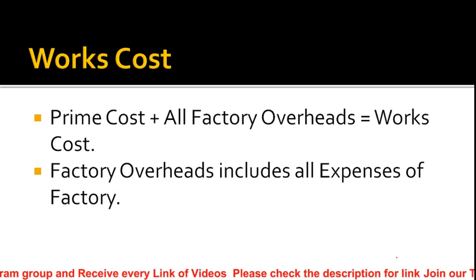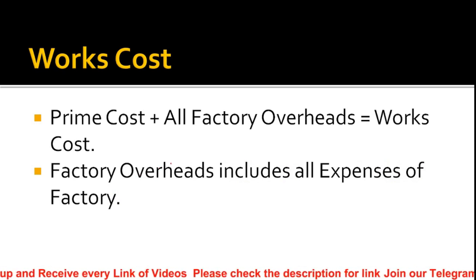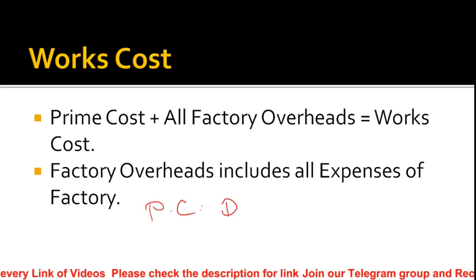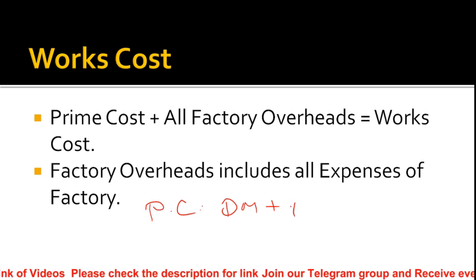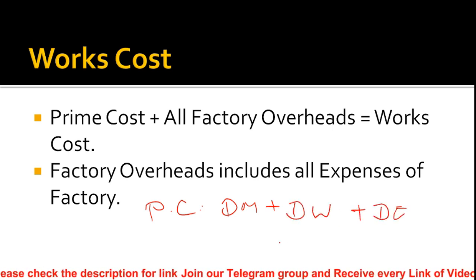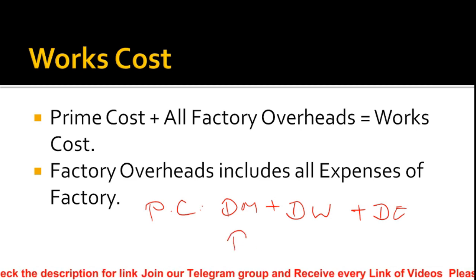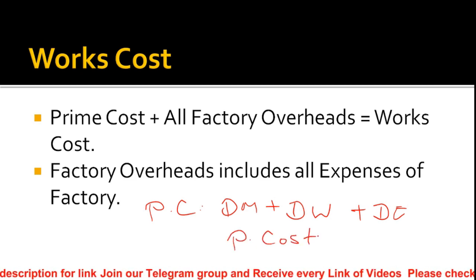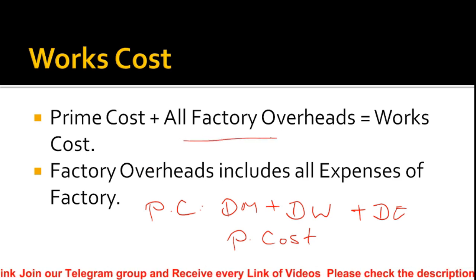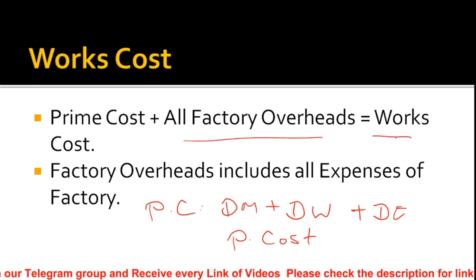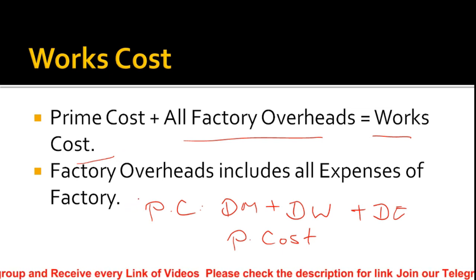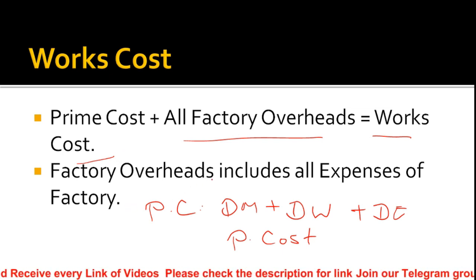Next is works cost. We have prime cost, which is direct material plus direct wages plus direct expenses. If we add all the factory overheads to prime cost, the answer is called works cost. Factory overheads include all factory-related expenses.